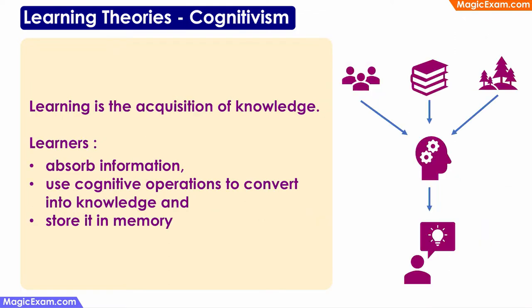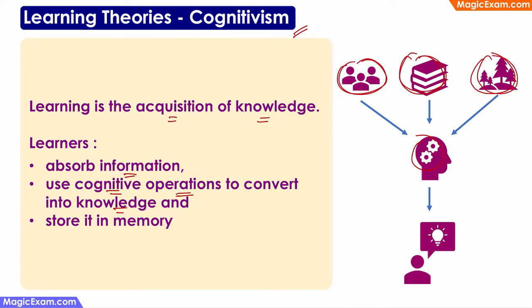The theory of cognitivism says that learning is the acquisition of knowledge — learning is an active process. Learners absorb information and then use cognitive operations such as thinking, logic, or reasoning to convert that information into knowledge. After that, they store it in their memory so that it can be used at a later stage.